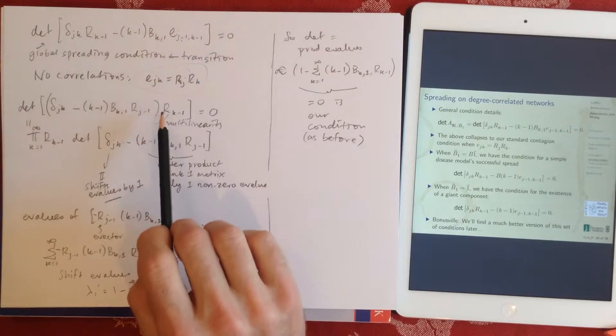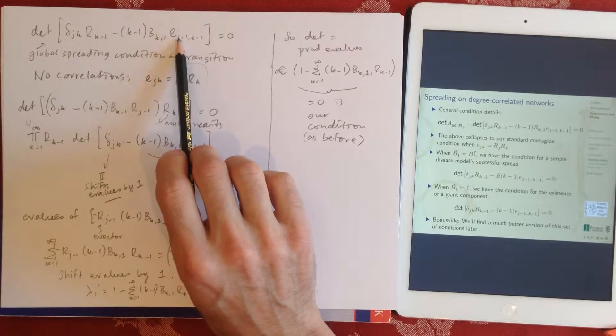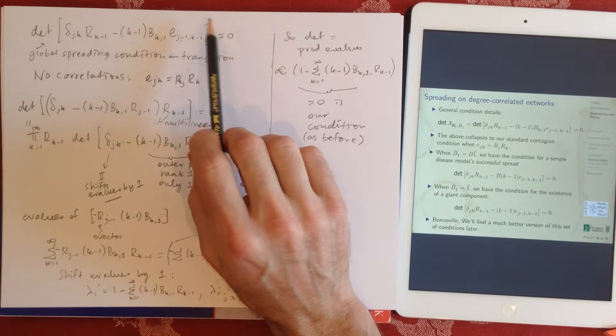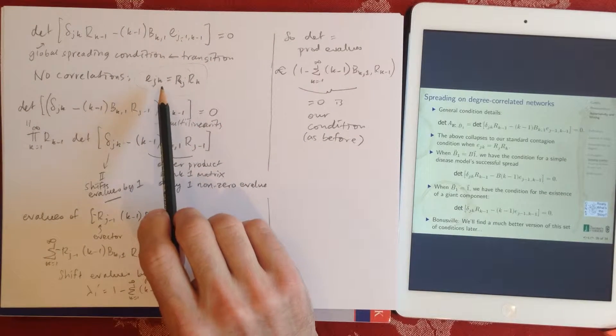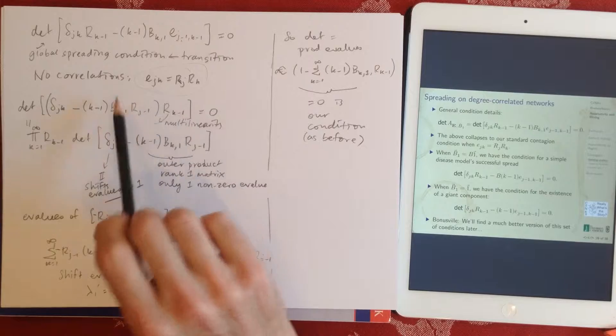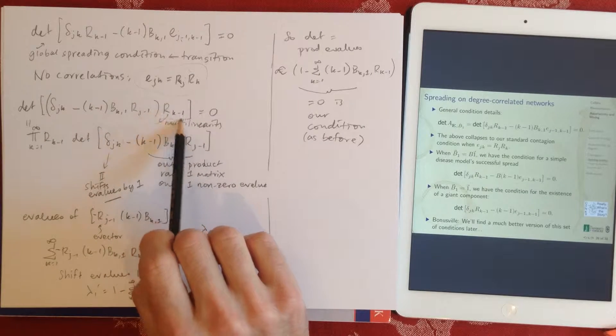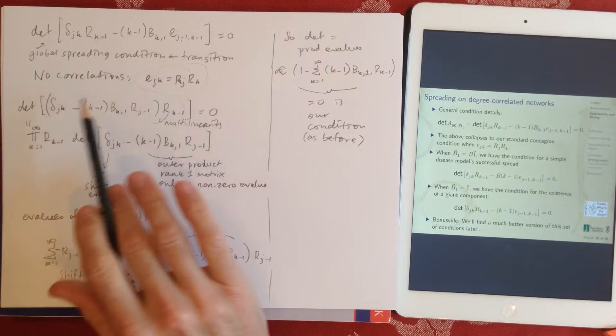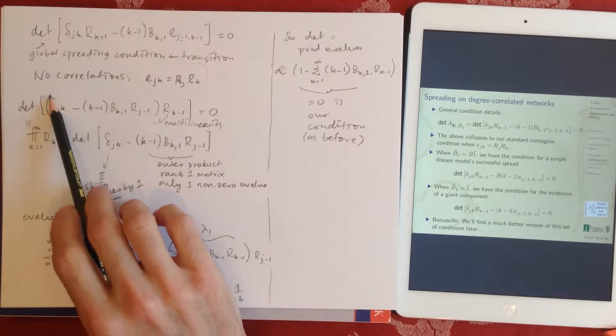All right, so we put that in here, and so we'll get an ej, we'll get an rj-1 and ek-1, an rk-1. And we can pull out the rk-1, there's one sitting here as well. And now we have something we can work with, right? So we see it's an identity minus a matrix, which is really an outer product.